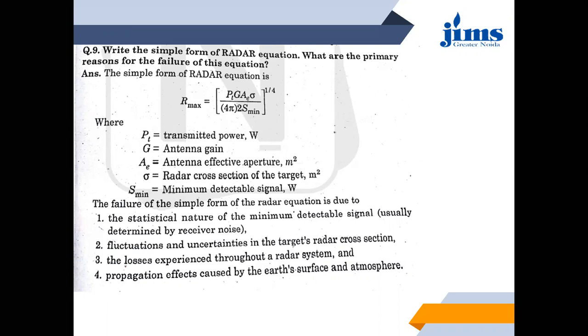The first reason is the statistical nature of the minimum detectable signal, usually determined by the receiver noise. The statistical nature means that the signal that detects a particular value can vary, and no one can detect the value above a certain threshold.